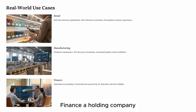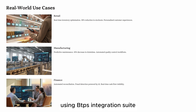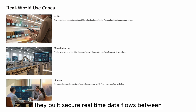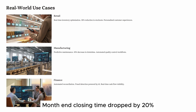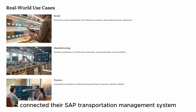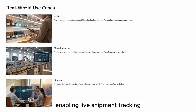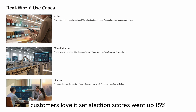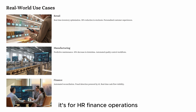Finance: a holding company needed to integrate SAP S/4HANA with external banking systems across Europe. Using BTP's Integration Suite, they built secure real-time data flows between SAP and various banking APIs — month-end closing time dropped by 20%. Logistics: one logistics company connected their SAP Transportation Management system with a third-party GPS provider. Through BTP, GPS data is streamed into SAP dashboards, enabling live shipment tracking. Customers loved it — satisfaction scores went up 15%. As you can see, SAP BTP is not just for coders or tech teams — it's for HR, finance, operations, logistics, for every business unit looking to innovate.